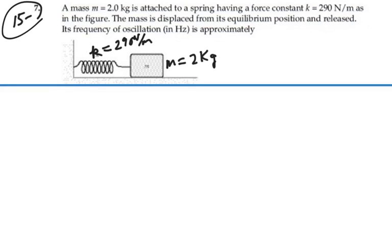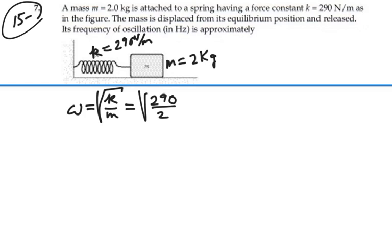So we know the angular frequency, which is the square root of k over m, is going to be the square root of 290 divided by 2. The square root of 145 is 12.04 per second. That's our angular frequency.